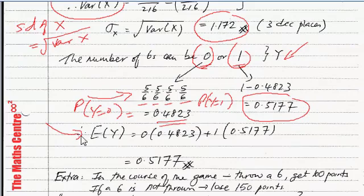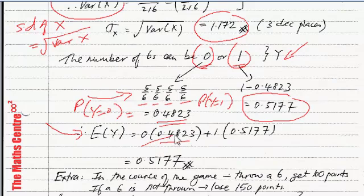To find the expected value of Y, that's easy because there are only two values, zero and one. Zero times its probability is gone. One times the probability gives us 0.5177. So the expected value of Y is 0.5177.